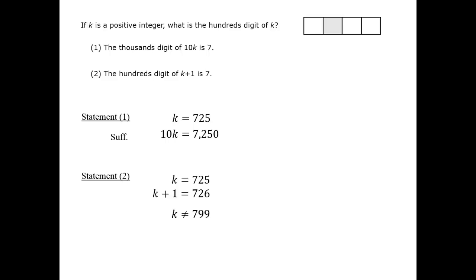799 is not a permissible case because k plus 1 equals 800 doesn't have a hundreds digit of 7. But along those lines, k equals 699 is a permissible case because k plus 1 equals 700 and it does have a hundreds digit of 7.